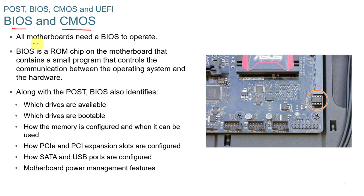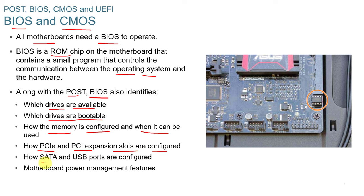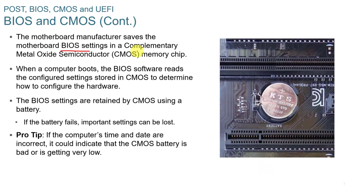All motherboards need a BIOS to operate. It's located on a ROM chip on the motherboard and contains a small program that controls communication between the operating system and the hardware. Along with POST, BIOS identifies which drives are available and bootable, how memory is configured, how PCI Express and PCI expansion slots are configured, how SATA and USB ports are configured, and the motherboard power management features. The motherboard saves BIOS settings in a Complementary Metal Oxide Semiconductor, or CMOS, chip. When the computer boots, the BIOS reads configured settings from CMOS — things like date and time.